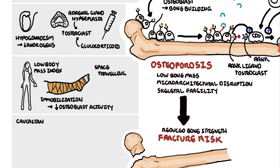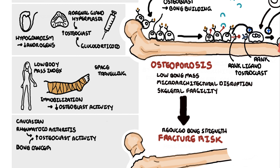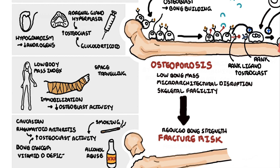Other risks include certain ethnic backgrounds — for example, white persons are at a higher risk than black persons. Rheumatoid arthritis and bone cancer increase inflammatory states around bone, which stimulates osteoclastic activity and so increases the risk of fractures and osteoporosis. There's also smoking, alcohol abuse, vitamin D deficiency, as well as low calcium intake.